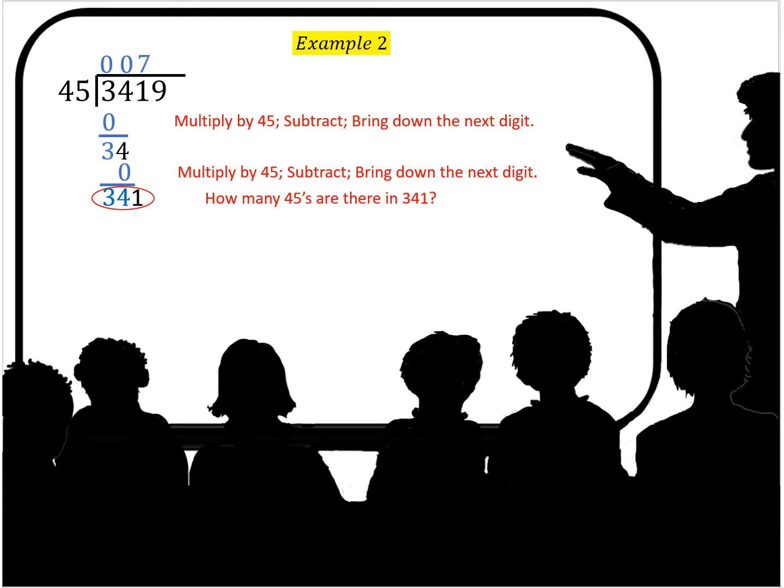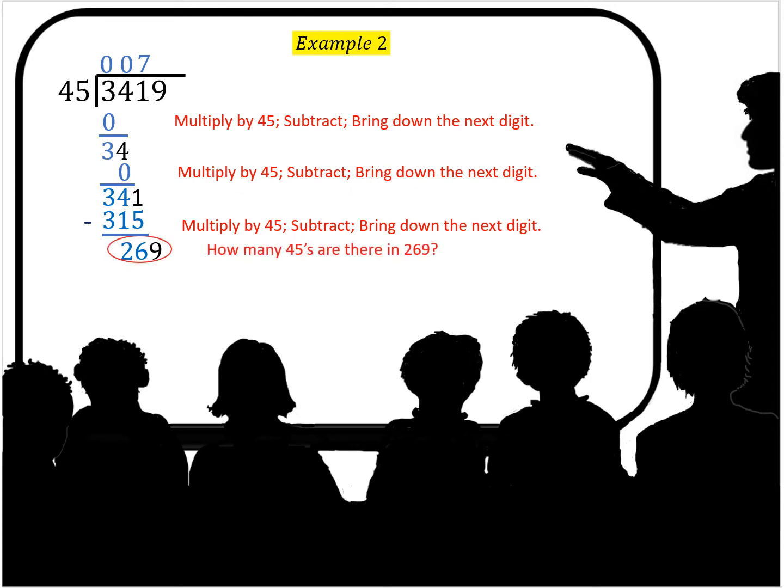How many 45s go into 341? Well there's seven. Seven times 45 is 315. Then you subtract. You get 26. Bring down the last digit 9.